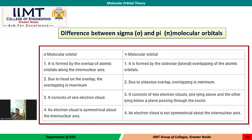The differences between sigma and pi molecular orbitals: sigma molecular orbitals are formed by head-on overlap of atomic orbitals along the inter-nuclear axis, with maximum overlap and one electron cloud that is symmetrical about the inter-nuclear axis, forming a strong bond. Pi molecular orbitals are formed by side-wise (lateral) overlap of atomic orbitals, with minimum overlap, forming a weaker bond. Pi MOs consist of two electron clouds — one lying above and one lying below a plane passing through the nuclei — and their electron cloud is not symmetrical about the inter-nuclear axis.